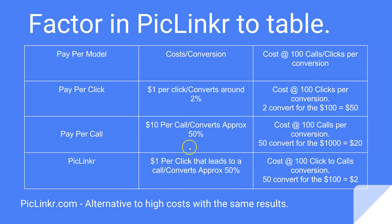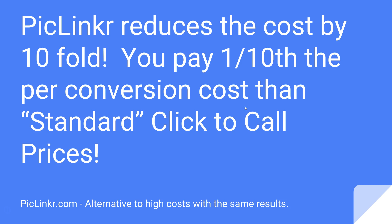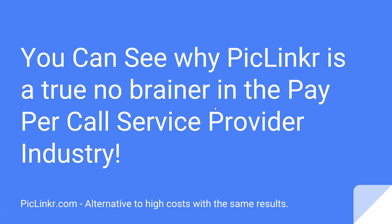So for 100 calls, all we do is 100 clicks — 50 of those convert — that's $2 per conversion. That's tenfold savings compared to pay-per-call. Piclinker reduces the cost by tenfold; you pay one-tenth of the per-conversion cost compared to standard click-to-call prices. You can see why Piclinker is a true no-brainer in the pay-per-call service provider industry. I'll see you guys on the inside.